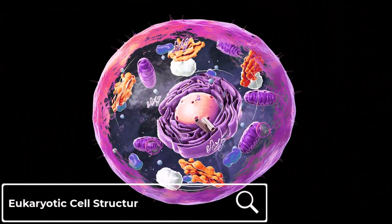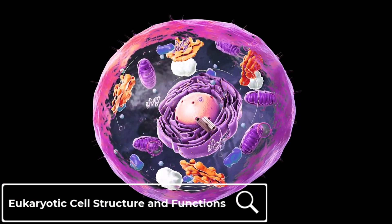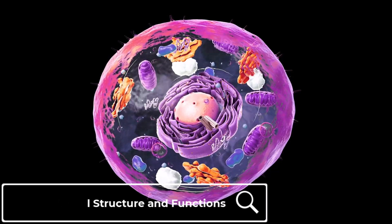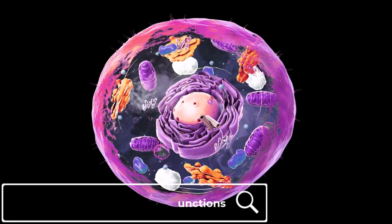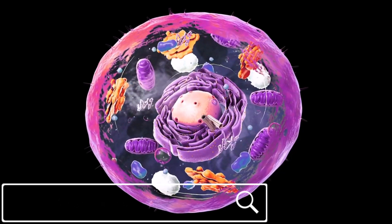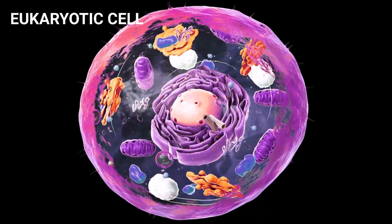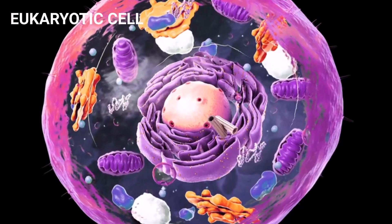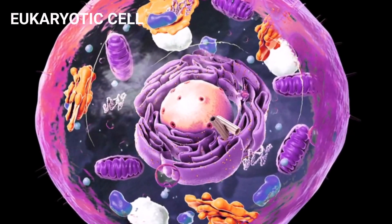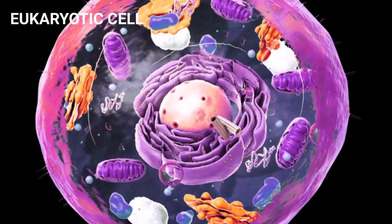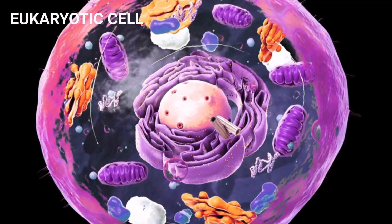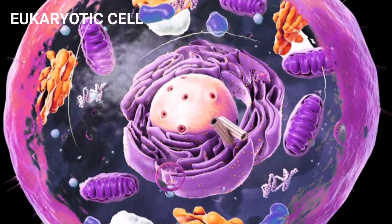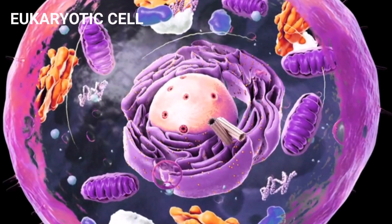Let's talk about eukaryotic cell structure and functions in today's lecture. Eukaryotic cells are the advanced cells that consist of a membrane-bound organized nucleus and different membrane-bound organelles.